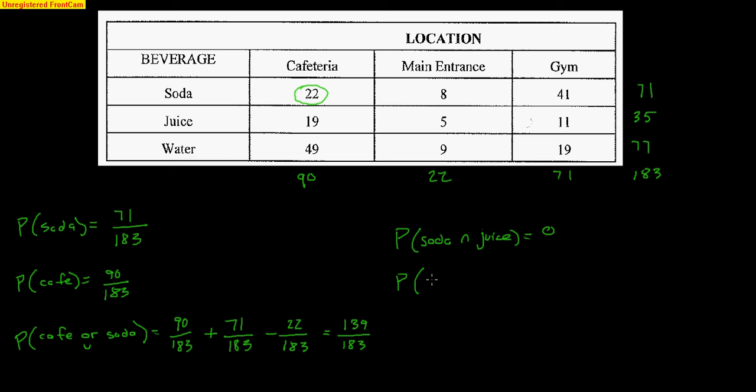What about the probability that you buy your beverage in the gym and it's a water? Okay, now this is possible. This would be the 19 out of 183 students that bought water and they used the vending machine in the gym. Now, I did not multiply to get that. I just looked in the chart. You do not need multiplication for and if you're just talking about choosing one student that did both items, bought water and used the gym vending machine.